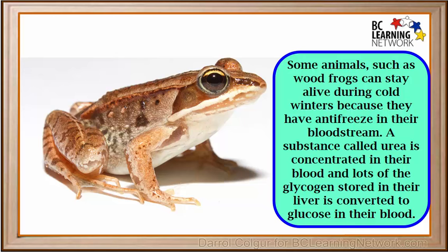Some animals have solutes in their blood which lower the freezing point. For example, wood frogs can stay alive during cold winters because they have a substance called urea, which is concentrated in their blood. Additionally, lots of the glycogen stored in their liver is converted to glucose in their blood. Urea and glucose are both solutes which lower the freezing point of the frog's blood.